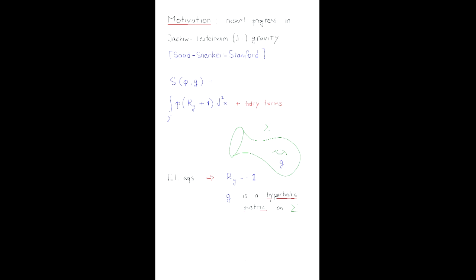There will be two parts of the motivation. One part comes from physics, another part comes from math. The physics motivation is related to recent progress in the so-called Jackiw-Teitelboim gravity. There are many versions of gravity, classical and quantum, in two dimensions. This is one of them.